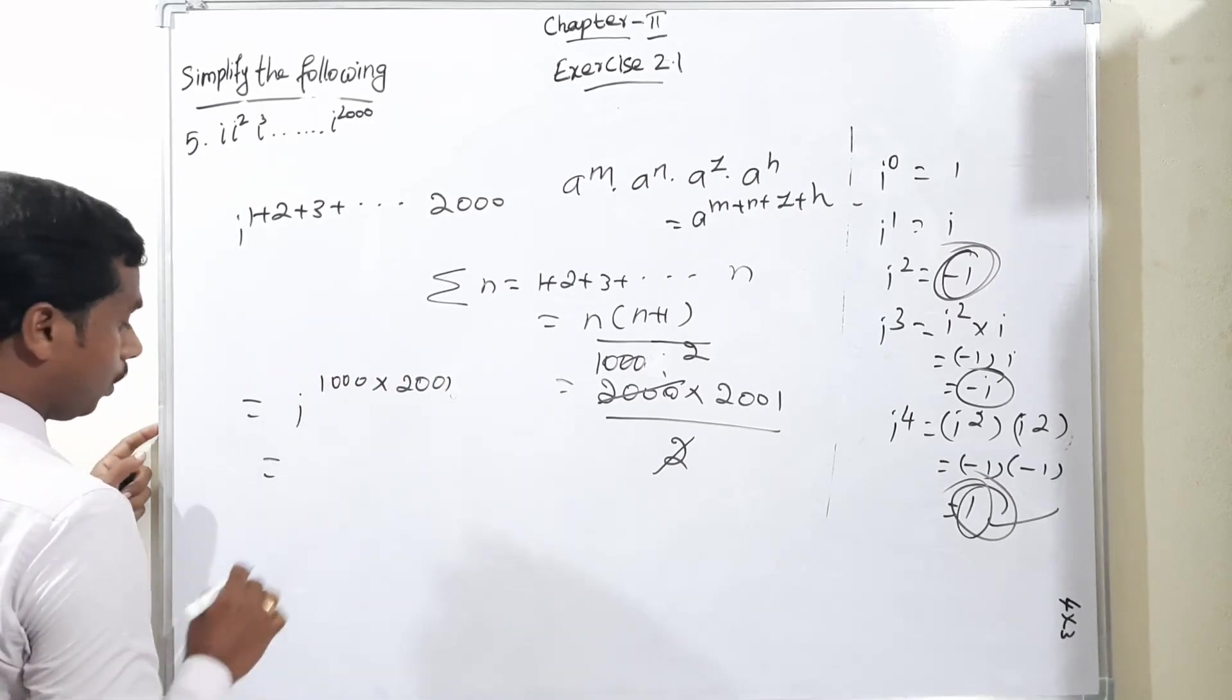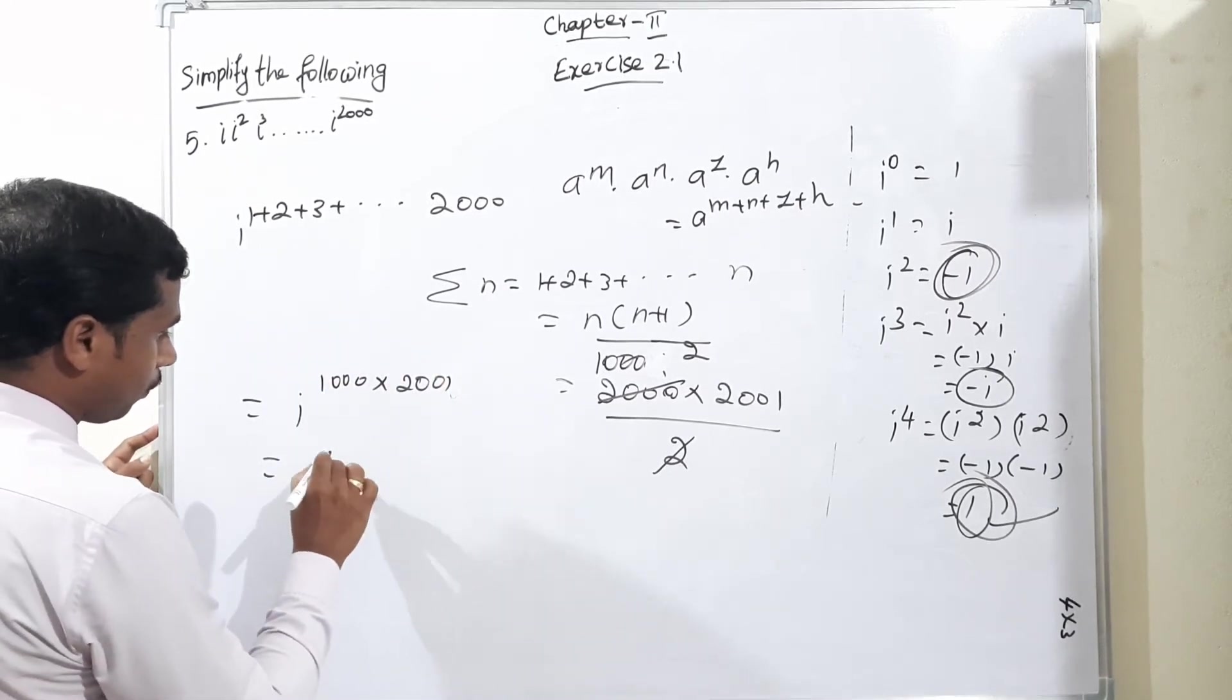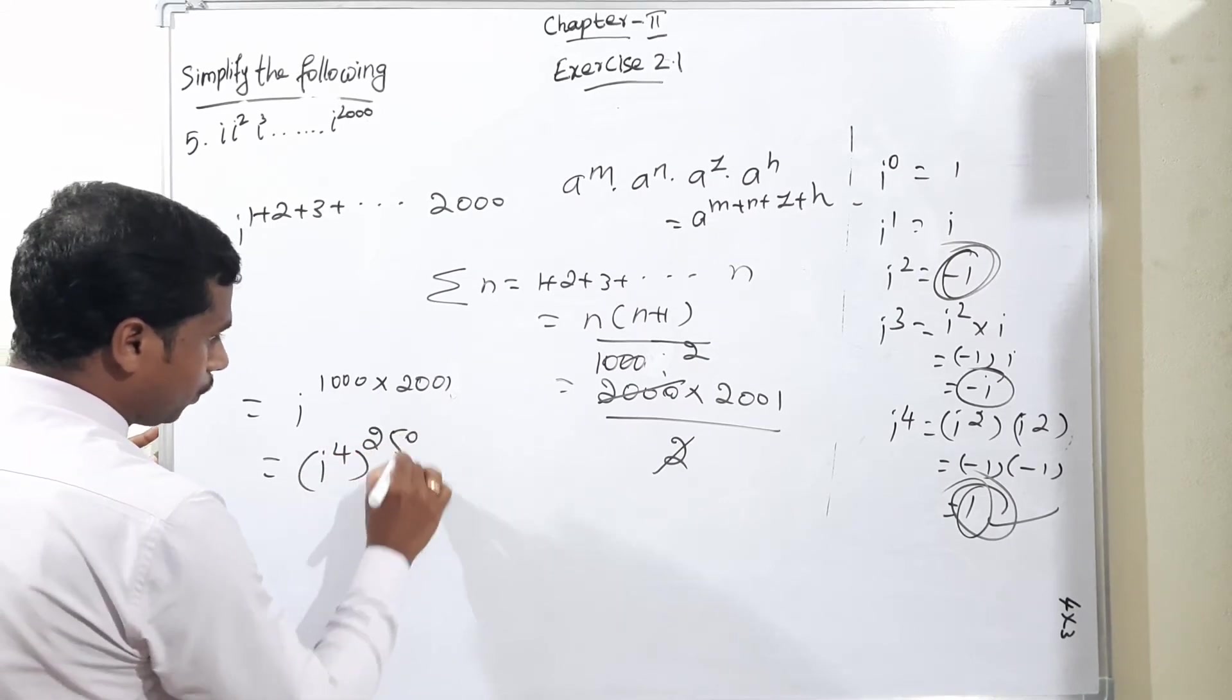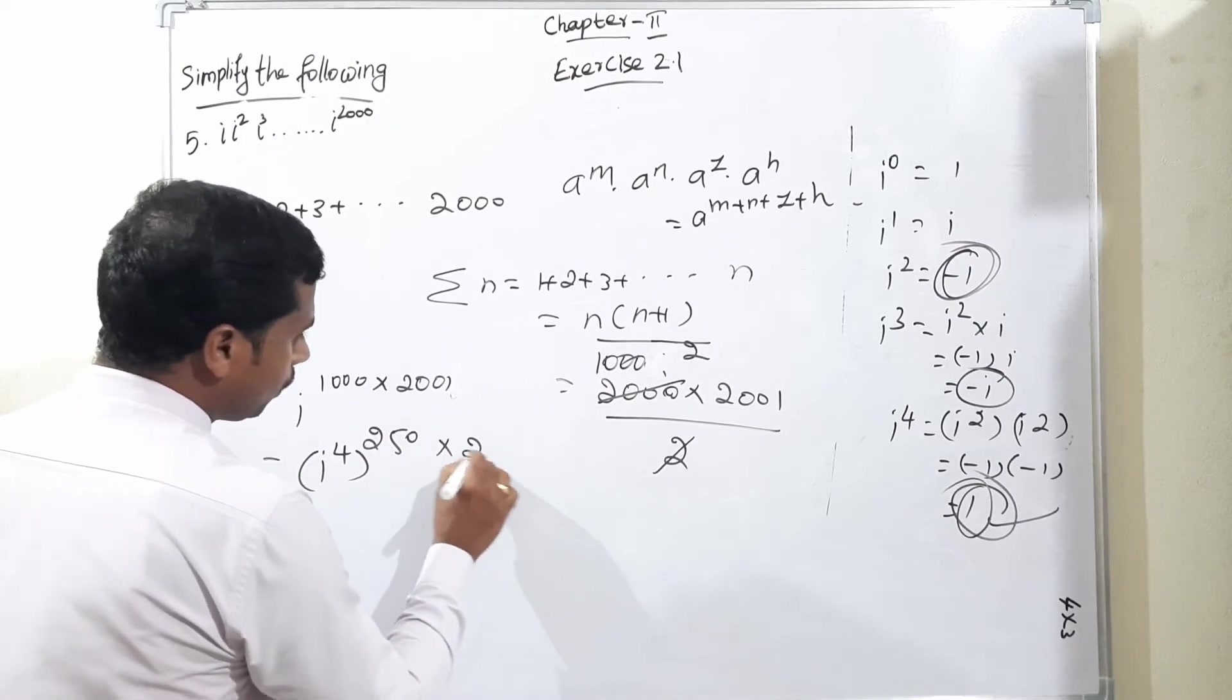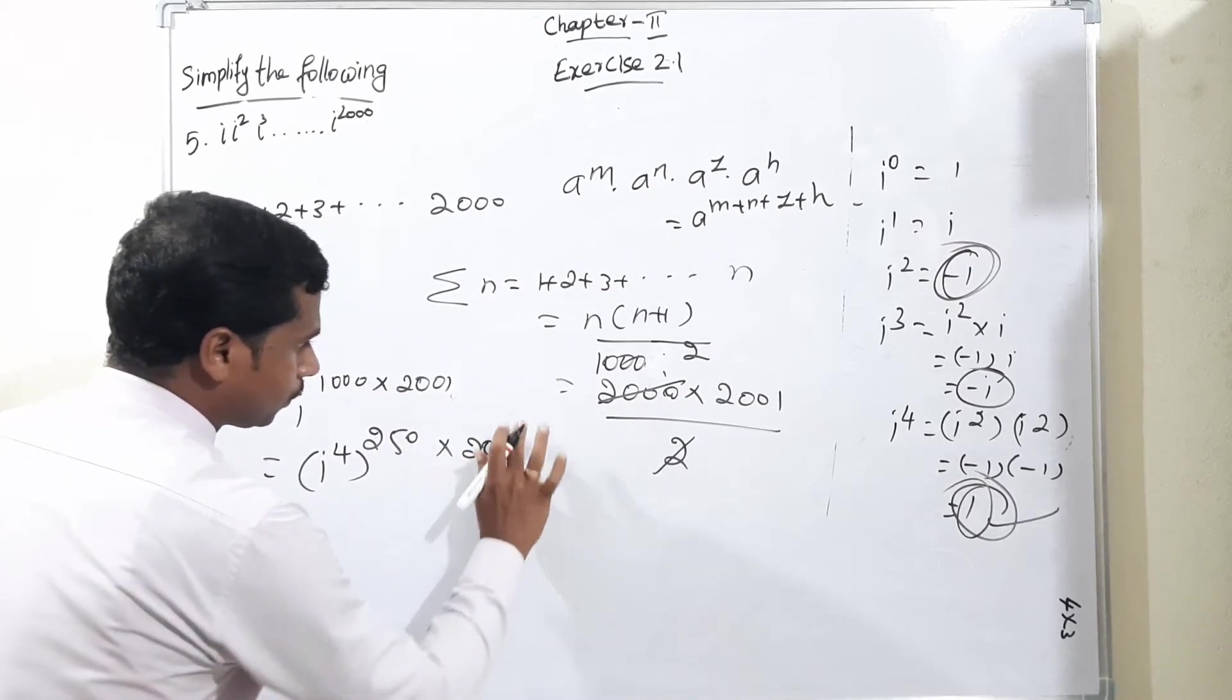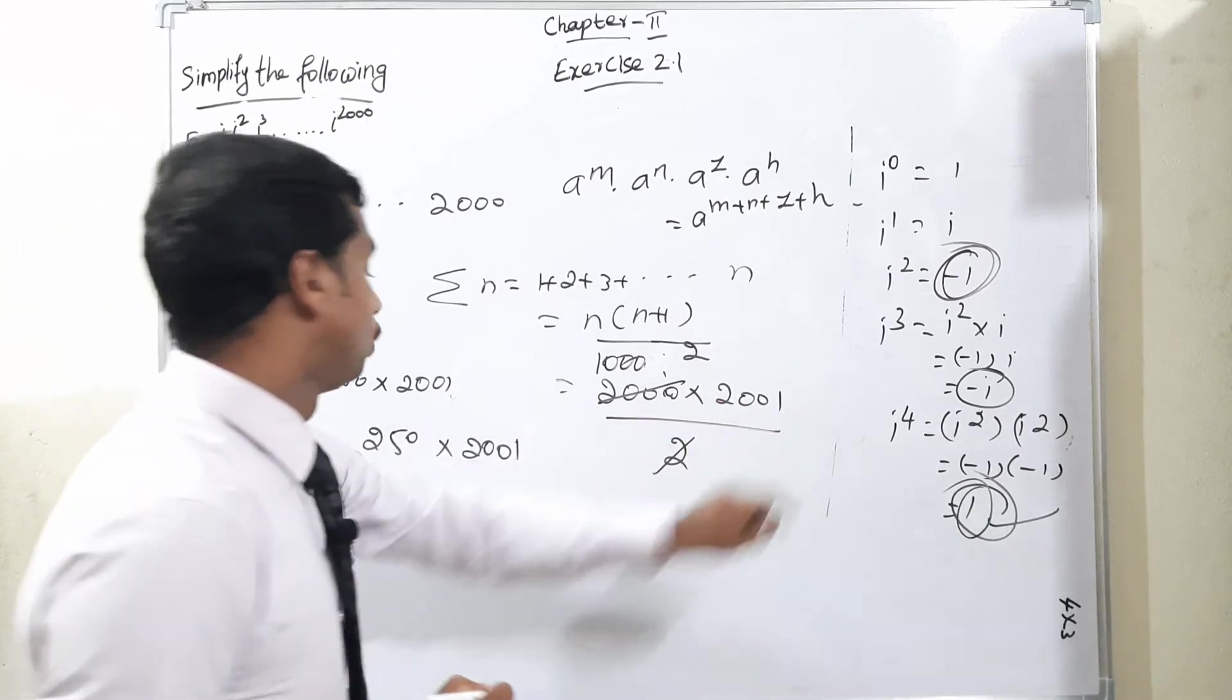Again how to split i to the power 1000: actually i to the power 4 the whole power of 250, isn't it, 250 times 2001.